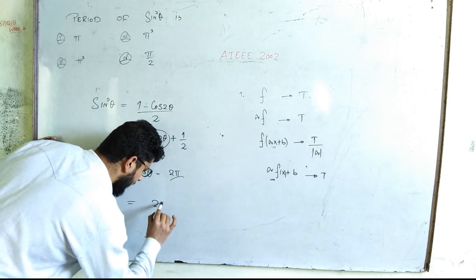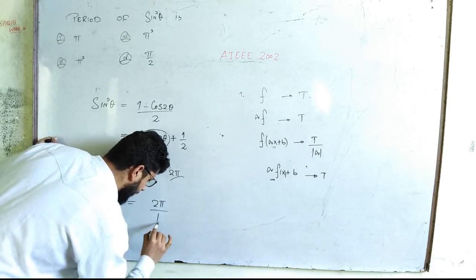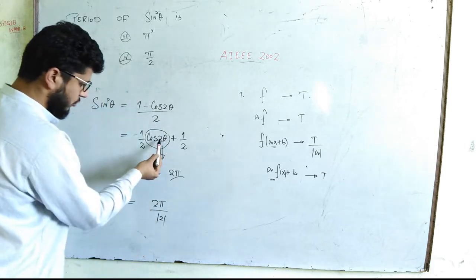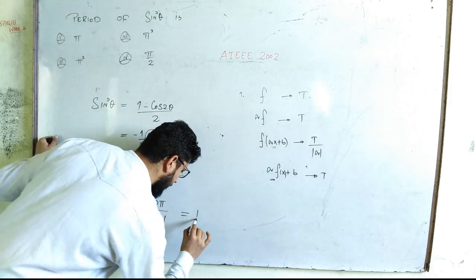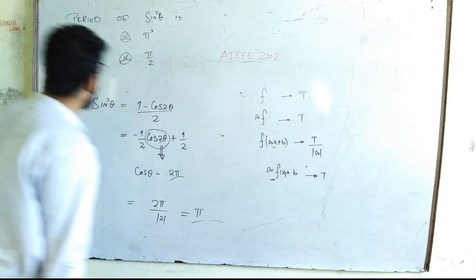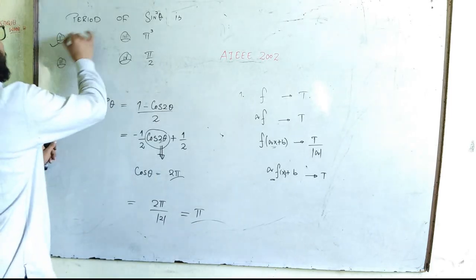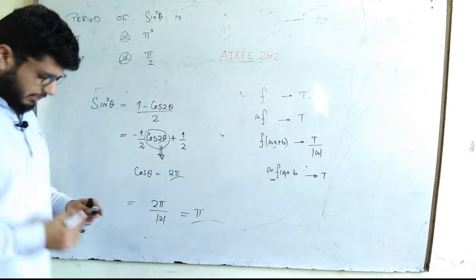Now what will be the period of this? Then it will be 2 pi upon mod of this 2, by this result 2 and 2 will go, so you are left with pi. So the option number first is correct, thank you.